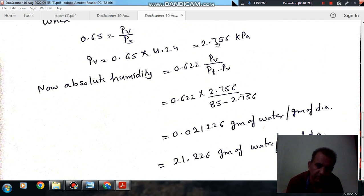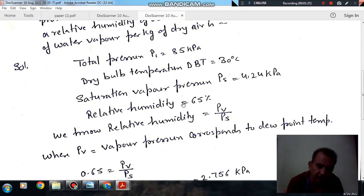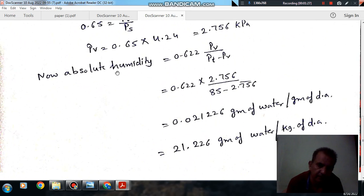So, putting the value of PV as 2.756 and PT as 85 kPa, we can get absolute humidity that is 0.021226 gram of water per gram of dry air.